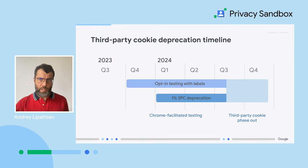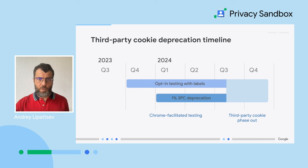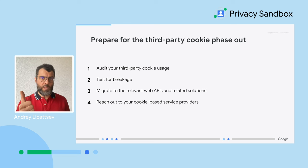When is this deprecation happening? The short answer is now. Chrome has started the process gradually with 1% of our users, and pending input from regulatory bodies like the UK's CMA, we are aiming to be done by the end of 2024. There are four main steps you need to take to prepare: see what's happening, see what's breaking, make the changes you need to make yourself, and ask those you're working with to make them too.